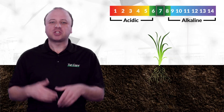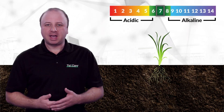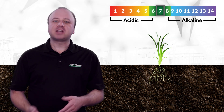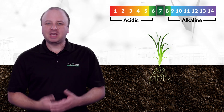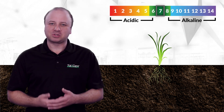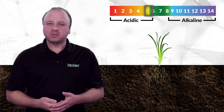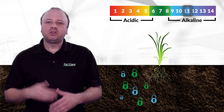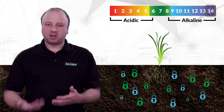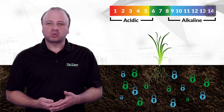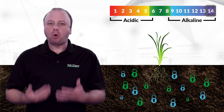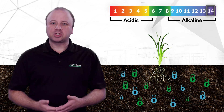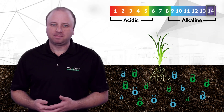Maintaining proper soil pH is critical for plant health for a variety of reasons, but most directly, pH has a profound influence on nutrient availability in the soil. As the pH of a soil shifts to acidic or to alkaline, nutrients begin to lock up or become unavailable. Knowing your soil's pH is important because an acidic or alkaline soil environment could neutralize your valuable fertilizer inputs.